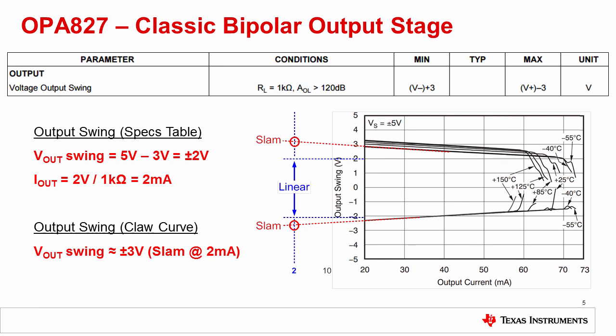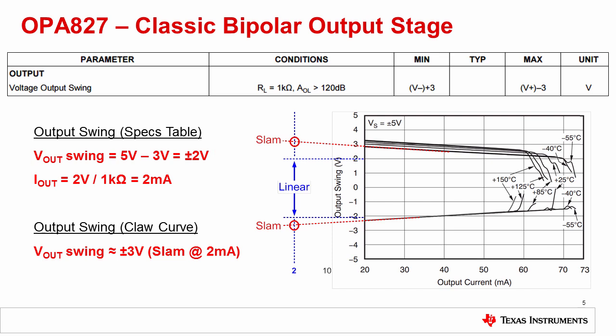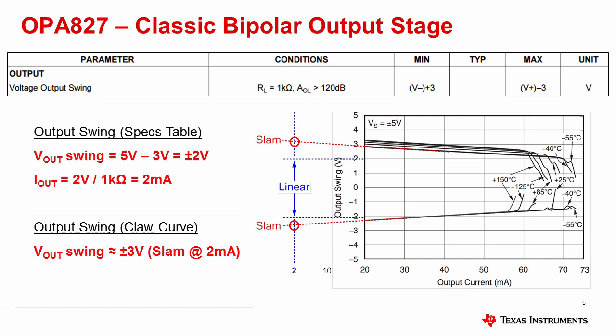The output swing in the table is linear because AOL is defined in the test conditions, while the claw curve is always a SLAM limit. For a plus or minus 5 volt supply, the table indicates a linear output range of plus or minus 2 volts. The table test condition also defines a 1k ohm load, which corresponds to a 2 milliamp current for the 2 volt output swing. You can extrapolate from the claw curve to see that the SLAM limits are around 3 volts, whereas the linear range is 2 volts.